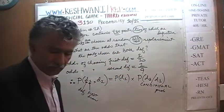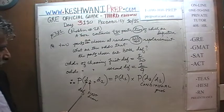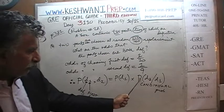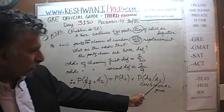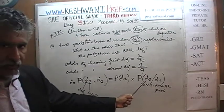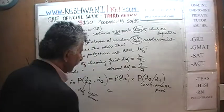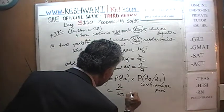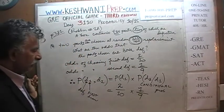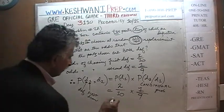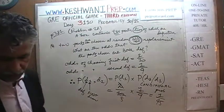This is known as conditional probability — conditional upon the fact that the first part drawn was defective. D stands for defective, and the subscript tells us which draw it is. The odds of choosing the defective part on the first draw was 2 out of 10. Because we are doing it without replacement, there was only one defective part left for the second draw out of nine remaining parts. Simplifying by dividing by 2: that gives us 1 out of 45.